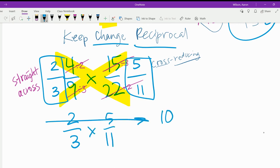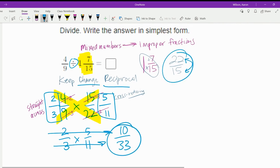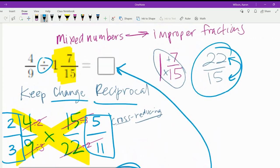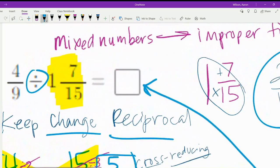2 times 5 is 10. 3 times 11 is 33. So the correct answer is ten thirty-thirds. That's what goes inside the box. 4 ninths divided by 1 and 7 fifteenths is ten thirty-thirds.